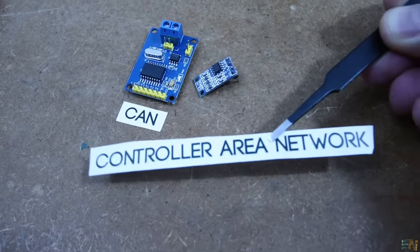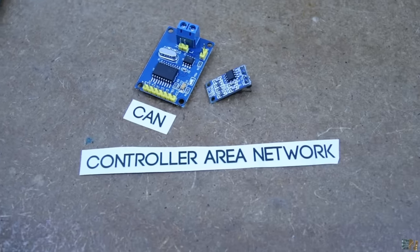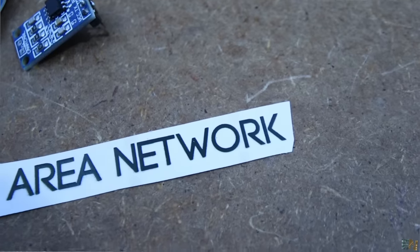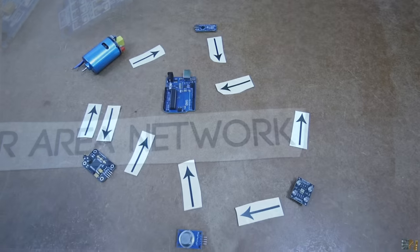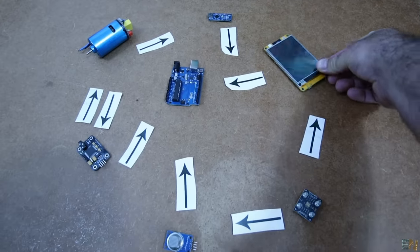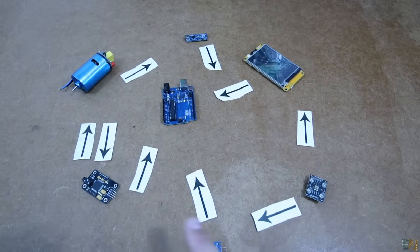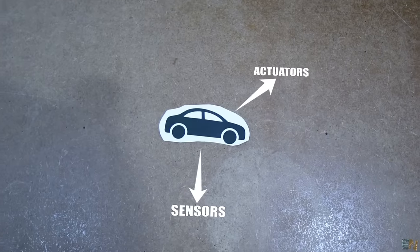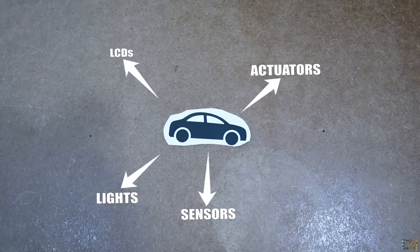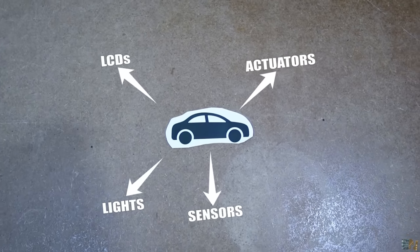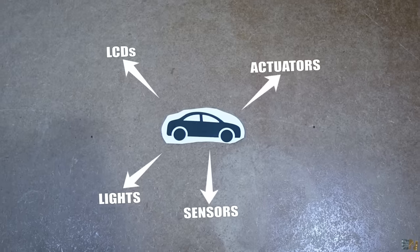First of all, CAN stands for Controller Area Network. So as the name implies, it works well in a network so we can have multiple devices connected together. That's why we use CAN communication for automotive applications where we have a bunch of sensors, actuators, some lights, some screens and so on, all communicating together.